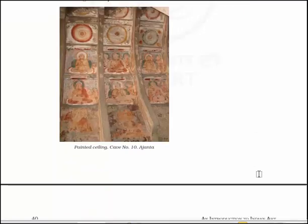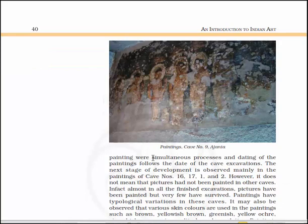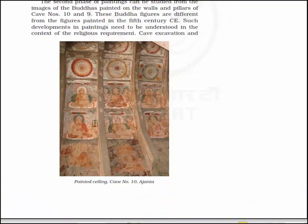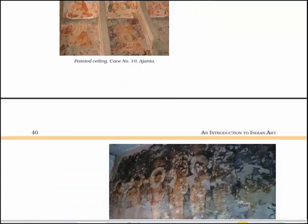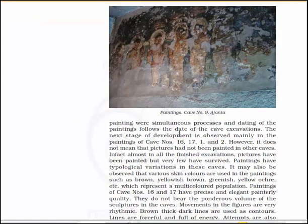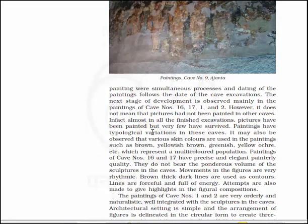Cave excavation and paintings were simultaneous processes and dating of the paintings follows the date of the cave excavation. Here you will see the painted ceiling of cave number 10 and cave number 9 of Ajanta. The next stage of development is observed mainly in the paintings of cave numbers 16, 17, 1 and 2. Almost all the finished excavations have paintings but very few have survived and paintings have typological variations. Various skin colors are used in the paintings — such as brown, yellowish brown, greenish, yellow ochre, etc. — representing a multicolored population.